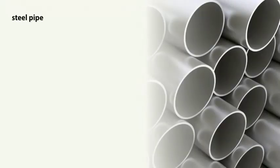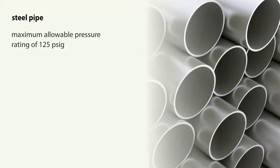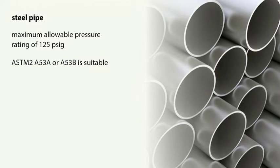Steel pipe can be purchased conforming to many different specifications and metallurgical grades. NFPA 54 identifies pipe for gas lines up to a maximum allowable pressure rating of 125 psig, stating that ASTM A53A or A53B is suitable, along with ANSI B160 seamless pipe.